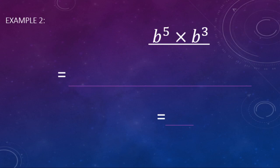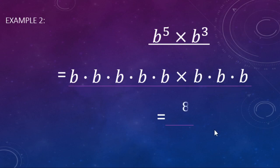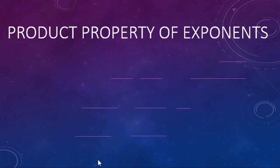Here we have b to the fifth power times b to the third power. The first part gives us five b's being multiplied — one, two, three, four, five. Times b cubed, that's three b's being multiplied — one, two, three. So altogether we have one, two, three, four, five, six, seven, eight b's being multiplied. There is a shortcut: we're basically just adding the exponents, as long as we have the same base. Five b's plus three b's gives a total of eight b's.